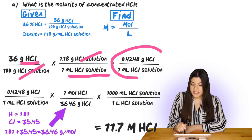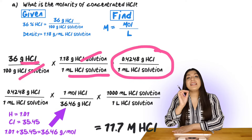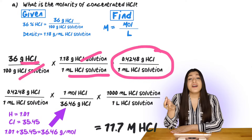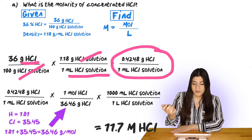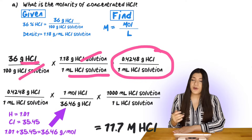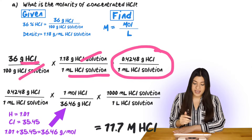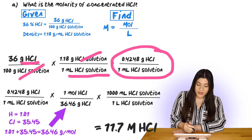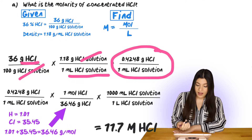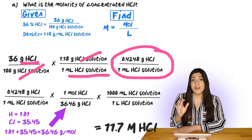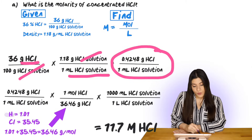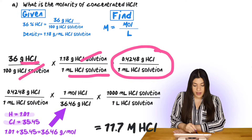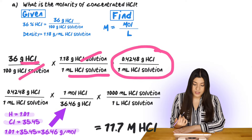We're at this current step now. We have to keep going because we're trying to find molarity — moles of HCl on top divided by liters of HCl solution. Taking that 0.4248 grams of HCl, I'm going to convert this to moles using the molar mass of HCl. The molar mass is found by adding hydrogen (1.01) and chlorine (35.45) to get 36.46 grams per mole.